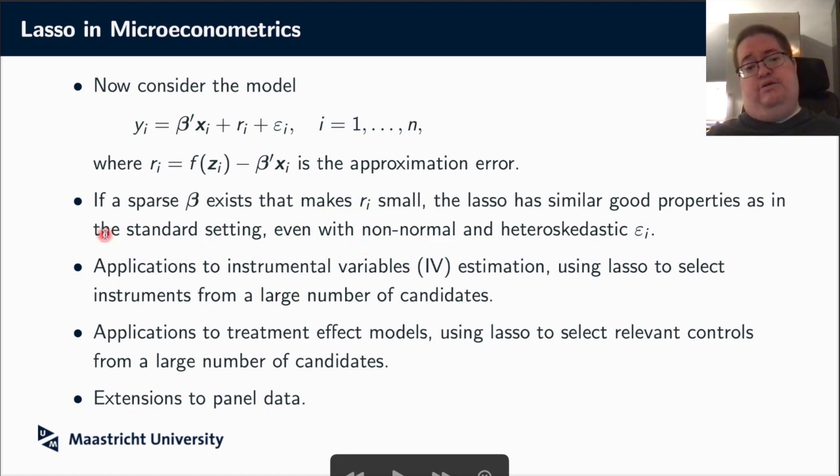And for instance, what they apply to is instrumental variables estimation, where you could have a large set of possible instruments. So you have some variable of interest that you know is endogenous, but you don't have one clear instrumental variable for it. You have a large set of candidates, but you can use the lasso to select the right instruments from this large set of candidates.